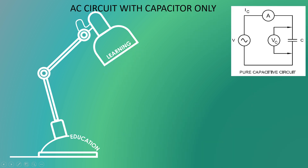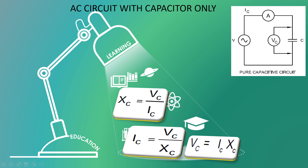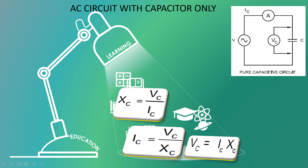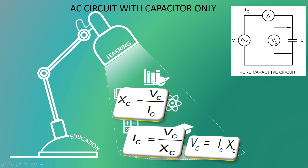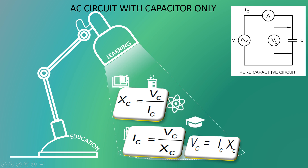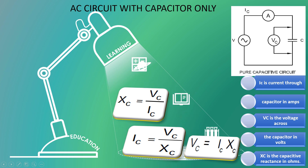AC circuit with capacitors only. When an AC circuit contains only capacitors, to find the current in capacitors, the voltage across the capacitor, and the capacitive reactance: formula number 1 — to find the voltage in capacitive circuit: voltage equals to IC into XC. To find the current in capacitive circuit: IC equals to VC divided by XC. IC is the current through the capacitor in ampere, VC is the voltage across the capacitor in volts, XC is the capacitive reactance in ohm.